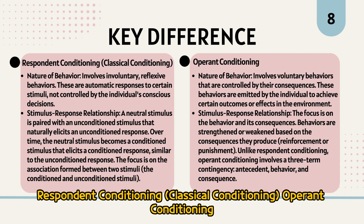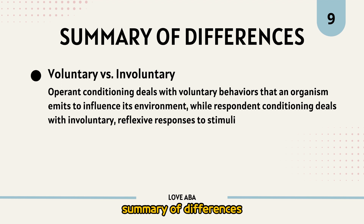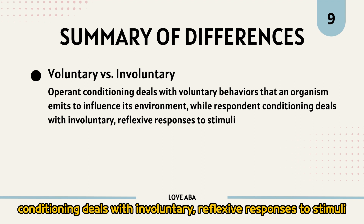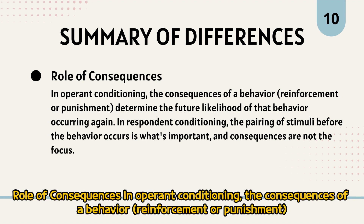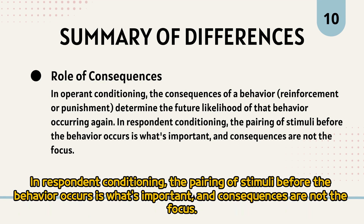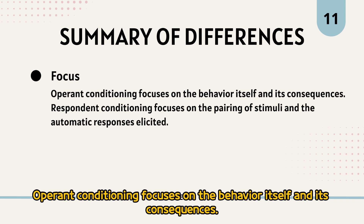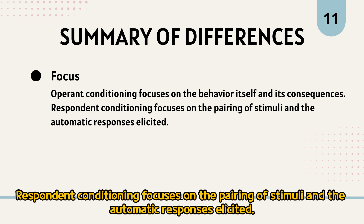Summary of differences: Voluntary versus involuntary — operant conditioning deals with voluntary behaviors that an organism emits to influence its environment, while respondent conditioning deals with involuntary, reflexive responses to stimuli. Role of consequences — in operant conditioning, the consequences of a behavior (reinforcement or punishment) determine the future likelihood of that behavior occurring again. In respondent conditioning, the pairing of stimuli before the behavior occurs is what's important, and consequences are not the focus. Focus — operant conditioning focuses on the behavior itself and its consequences, while respondent conditioning focuses on the pairing of stimuli and the automatic responses elicited.